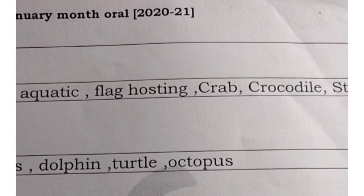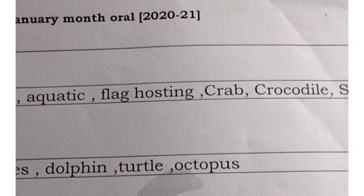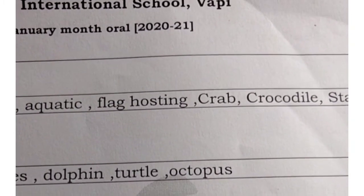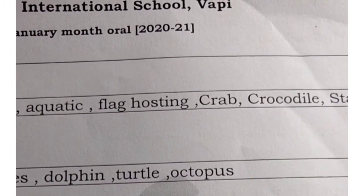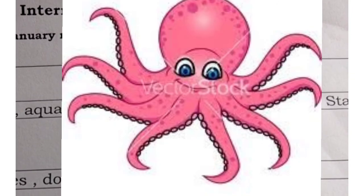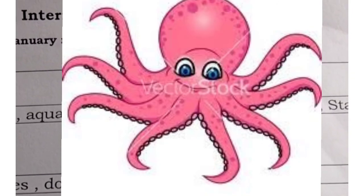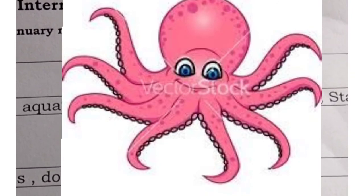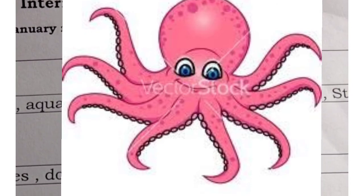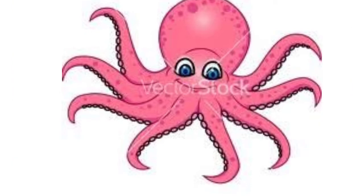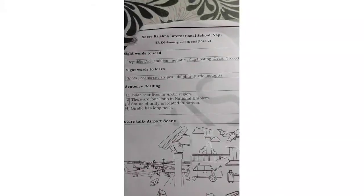Next: Octopus. O-C-T-O-P-U-S. So kids, how many legs does an octopus have? Octopus has 8 legs — let us count: 1, 2, 3, 4, 5, 6, 7, 8. So octopus has 8 legs. Now kids, you need to learn the spellings and read this. Okay kids, bye-bye!